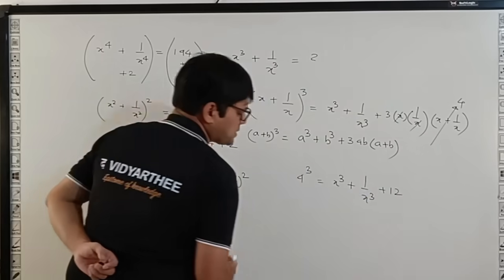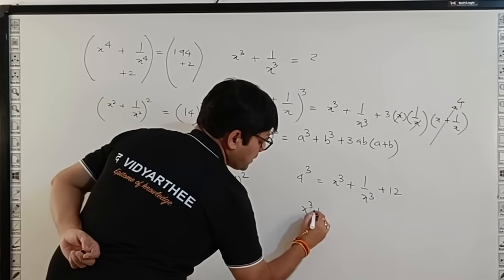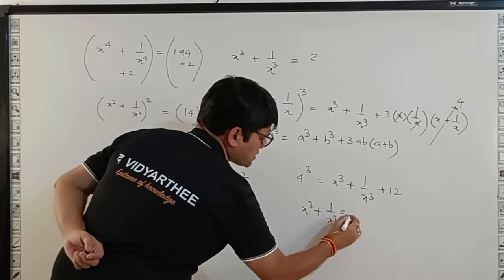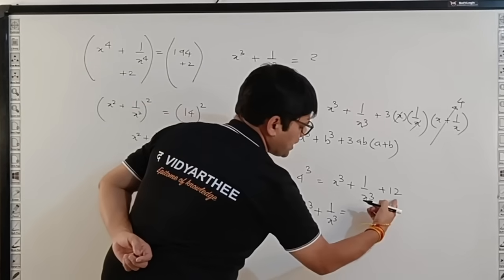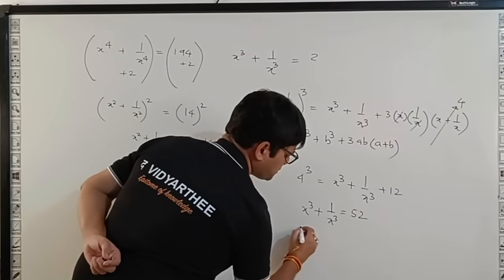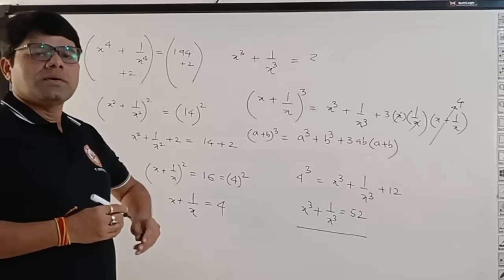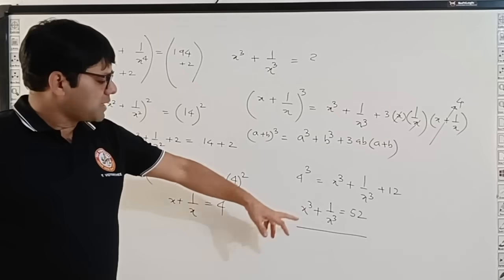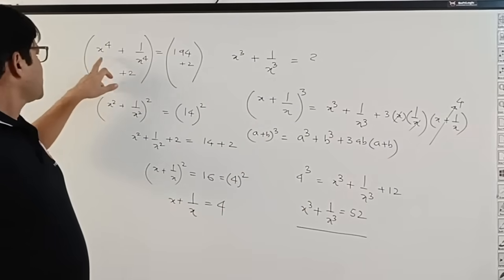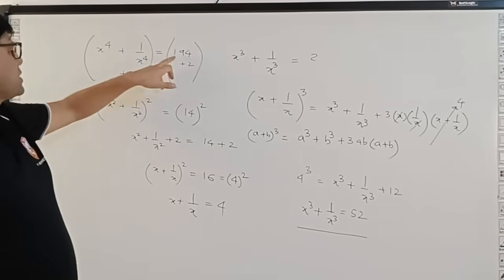So what is my answer? My answer is x^3 + 1/x^3 = 4^3 = 64 - 12 = 52. I hope you got your answer: x^3 + 1/x^3 = 52, where x^4 + 1/x^4 = 194.